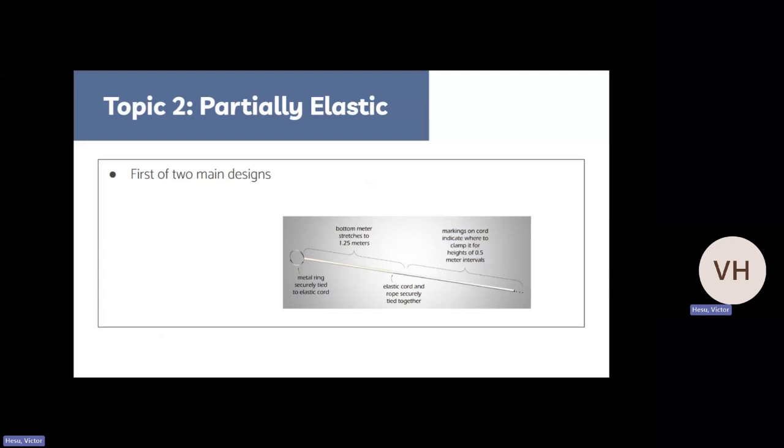To touch on the first of the main two designs, credit to Bernard from scioly.org for this diagram. One of them is a partially elastic device. This consists of both a part which is relatively non-elastic, like a string or a cord at the very top. And then at the bottom, you have your elastic part. This is so that you meet that elasticity requirement within the rules where the bottom is able to stretch up to 1.25 meters.